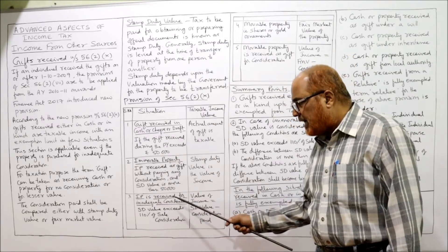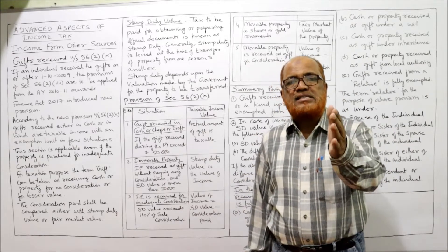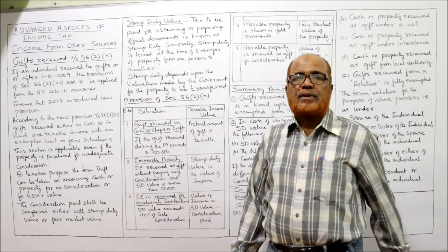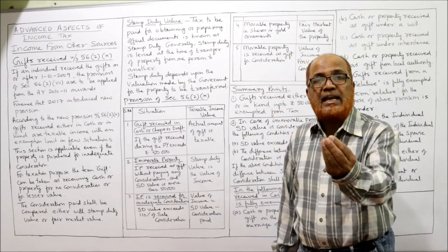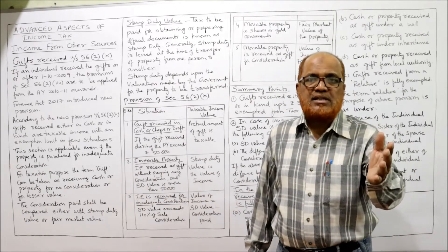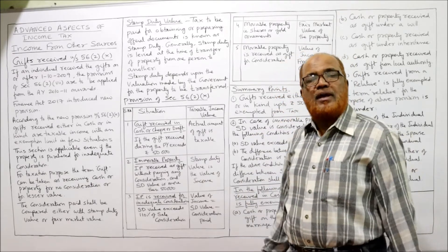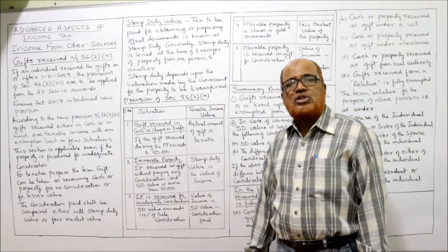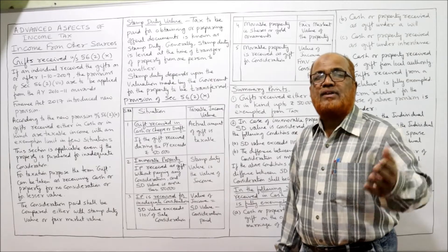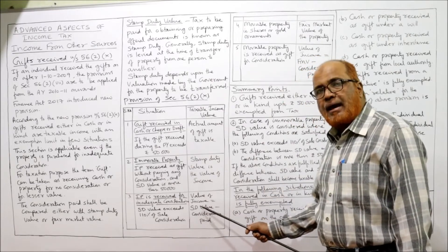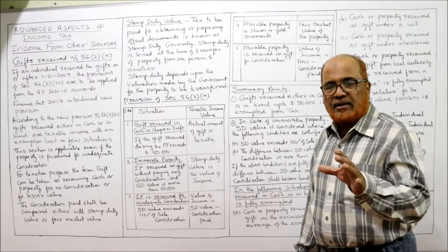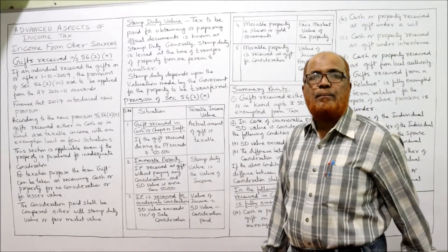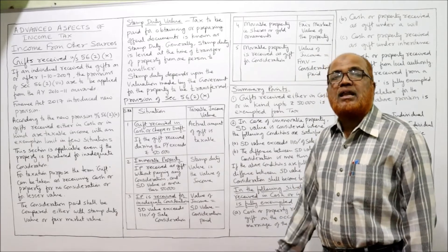Suppose immovable property is received for inadequate consideration — Mr. A has transferred a property to Mr. B for a nominal consideration. The value of the property is Rs. 50 lakh, but Mr. A has transferred the property to Mr. B for only Rs. 10 lakh — that is inadequate consideration. In that case, income tax checks if stamp duty value exceeds 110% of consideration. If so, the value of the income is stamp duty value minus consideration paid. That is the taxable income in the hands of the recipient of the gift.